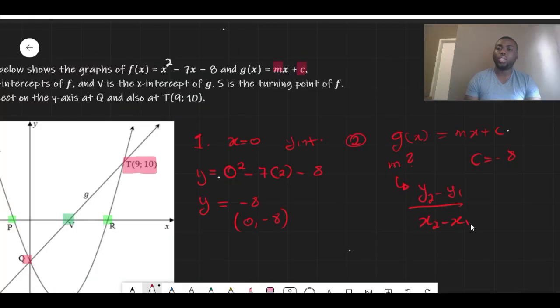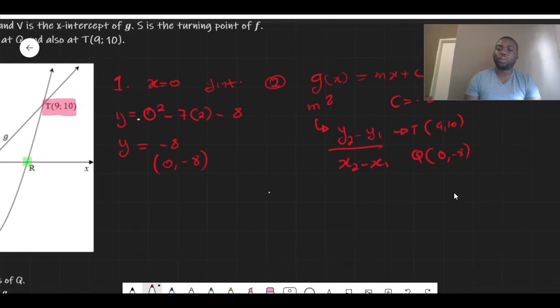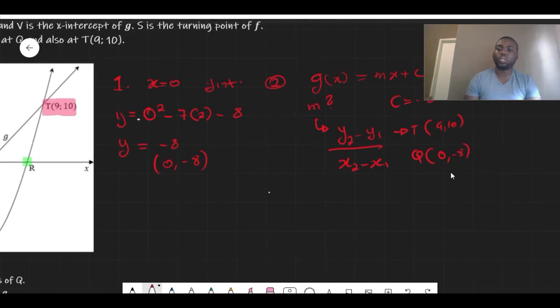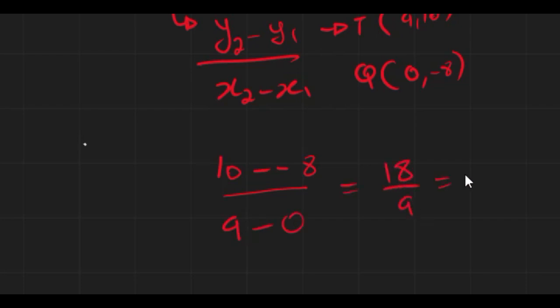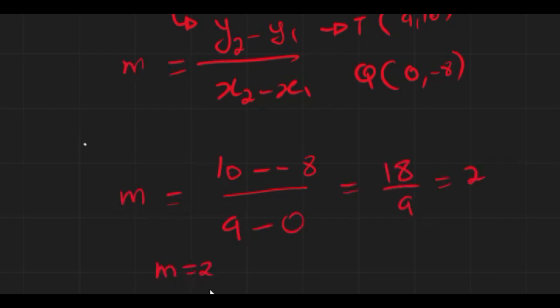To get our gradient we use the gradient formula, which looks like this. Now all we need is two points on that straight line for this to work. So we have the point of T and we have the point of Q, so we substitute those into our gradient formula. So we have our gradient to be 2, so all we just need to do is substitute our m and our c into the g(x) formula.